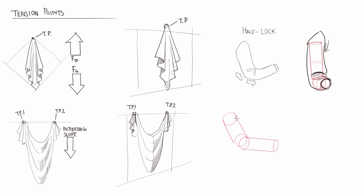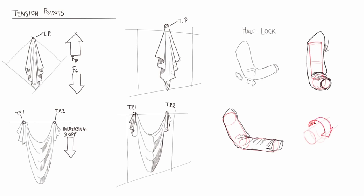A somewhat more intuitive fold is the spiral fold, which occurs from a twisting force that is applied to a fabric. The most pronounced example of this is when someone rotates their arm and the fabric rotates along with it. So long as you understand the three-dimensional form that the fabric is rotating around, creating a spiral fold should be relatively intuitive.